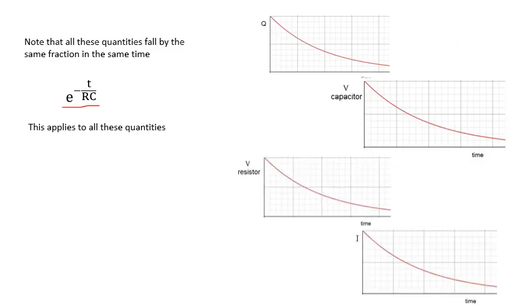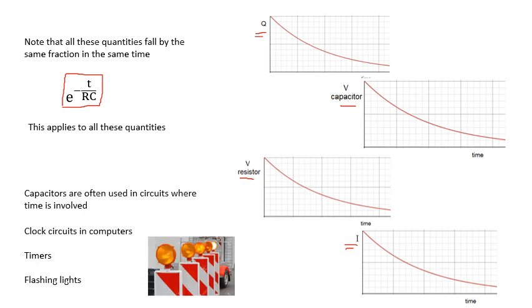Now, this magic thing here, E to the minus T over RC, that is the fraction that remains. Whether we're talking about the charge on the capacitor or the voltage across the capacitor or the voltage across the resistor or the current through the resistor, I can use this E to the minus T over RC. It applies to all of these quantities. And capacitors are often used in circuits where time is involved. That's the whole point of these circuits with capacitors. For example, in computers there's a thing called a clock circuit. Everything has to happen at the right time and all together. A timer circuit, like a very simple version would be like an egg timer. Flashing lights, that's a circuit called an astable. And that circuit has a capacitor in it. Where time is involved, you'll always find a capacitor charging or discharging.